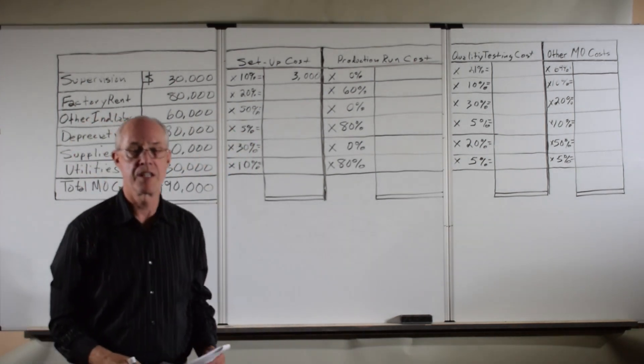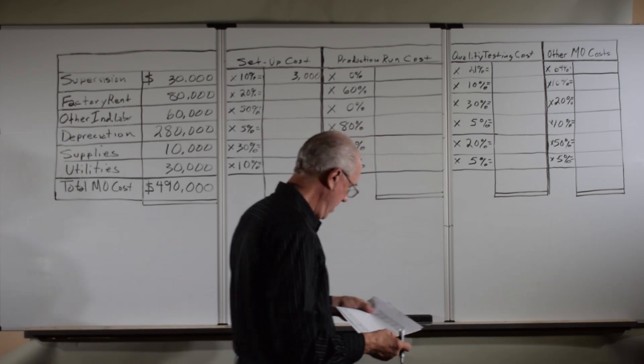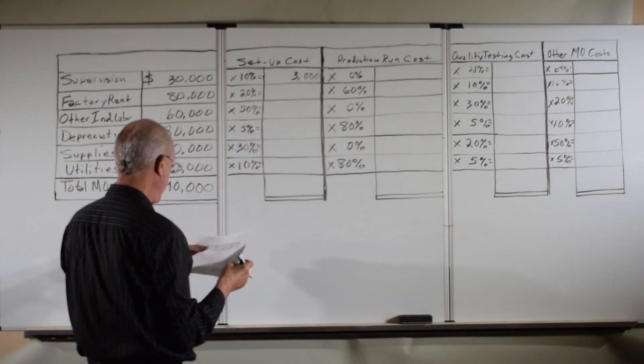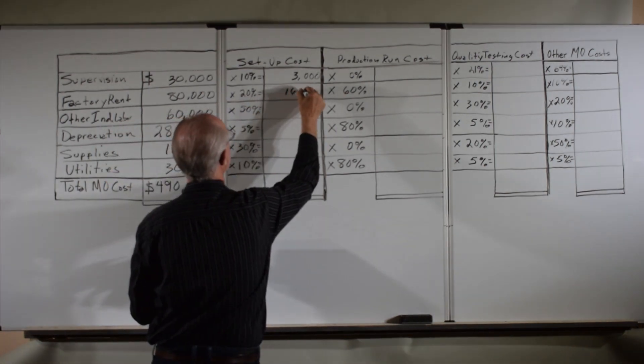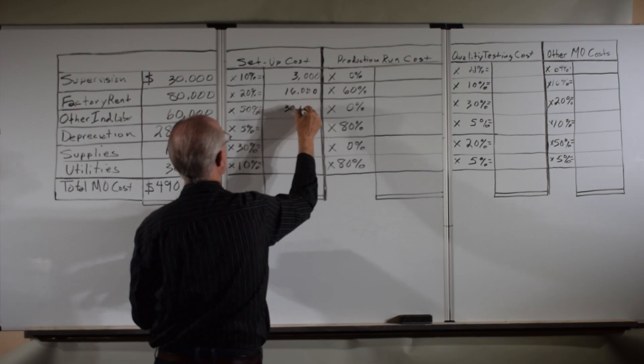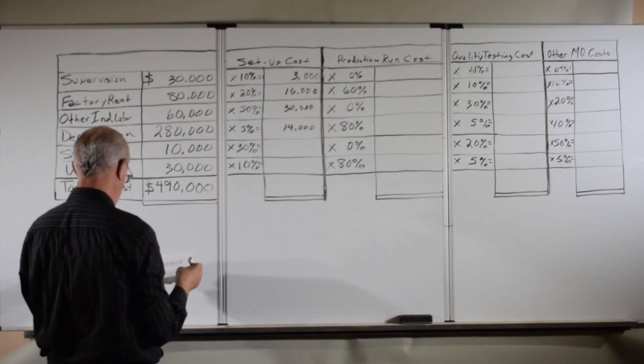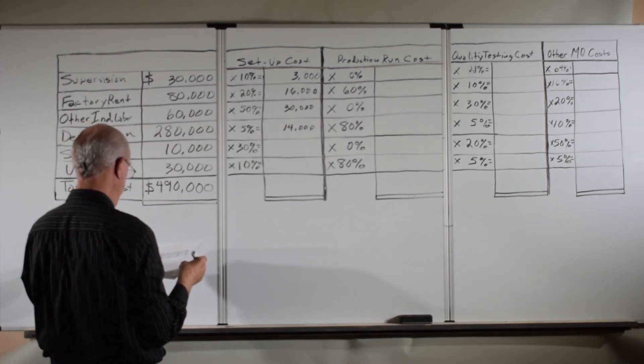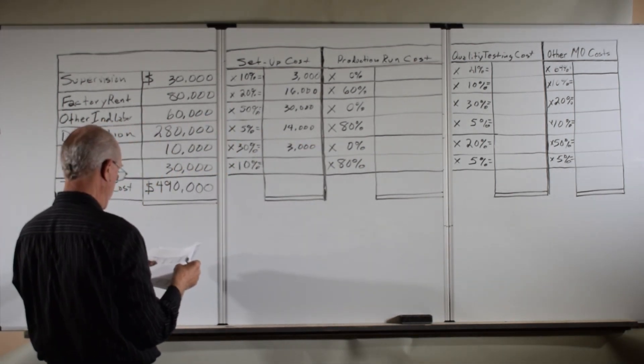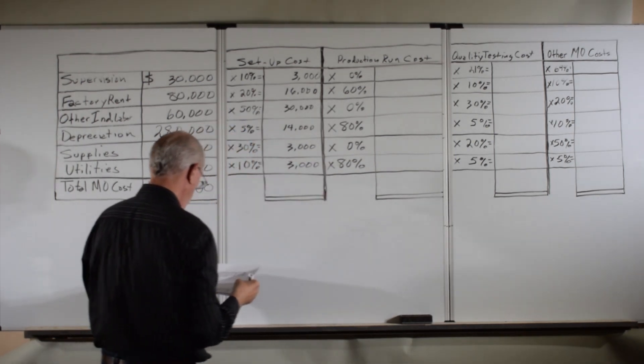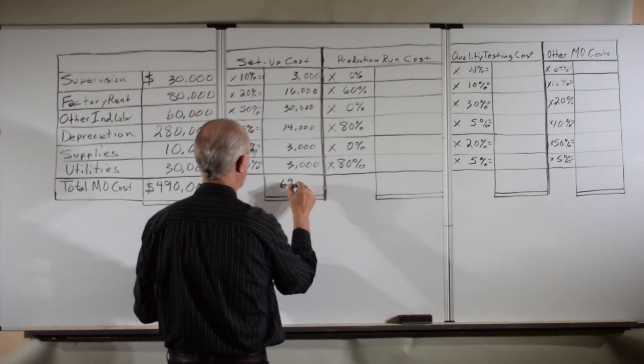Now all we've got to do is the multiplication. So doing the multiplication: 10% of 30,000 is 3,000. 20% of 80,000 is 16,000. 50% of 60,000 is 30,000. 5% of 280,000 is 14,000. 30% of 10,000 is 3,000. And 10% of the 30,000 is again 3,000. When we add this up, it adds to $69,000.